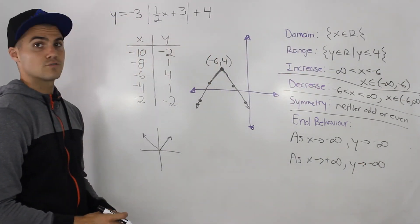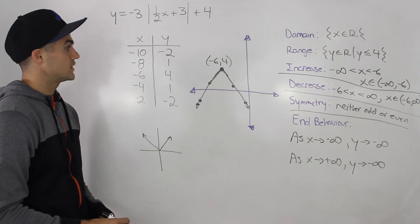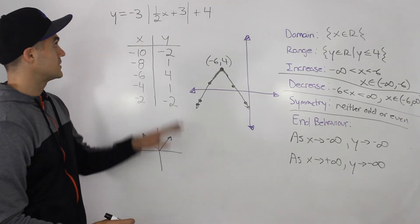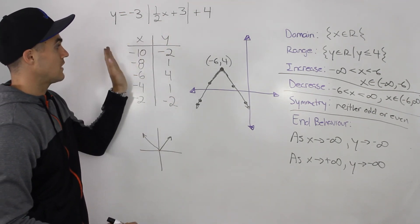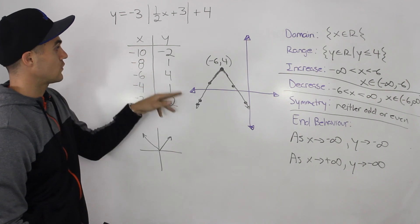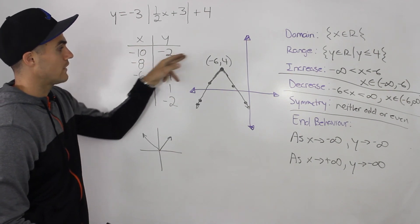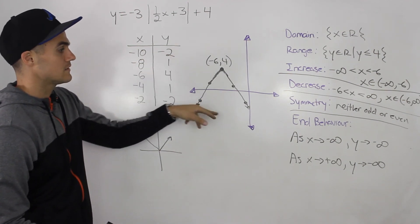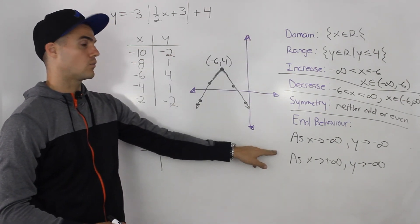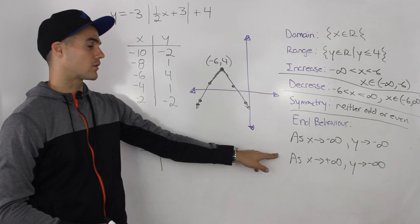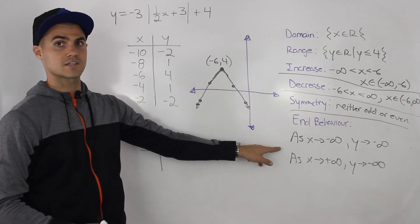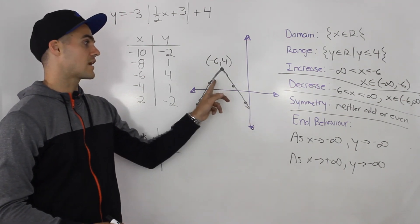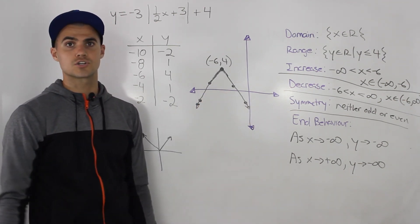That's it for this question — a pretty long one. We took the absolute value parent function, transformed it, built the table of values, graphed it, and then identified its characteristics from the graph.